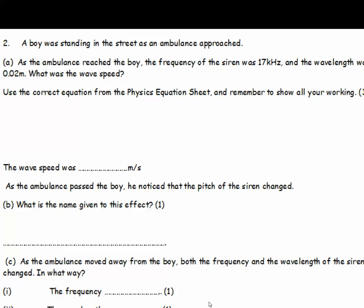A boy was standing in the street as an ambulance approached. Part A. As the ambulance reached the boy, the frequency of the siren was 17 kHz and the wavelength was 0.02 metres. What was the wave speed? Use the correct equation from the physics equation sheet and remember to show all your working. Give the answer in metres per second. As the ambulance passed the boy, he noticed that the pitch of the siren changed. What is the name given to this effect? And Part C. As the ambulance moved away from the boy, both the frequency and the wavelength of the siren changed. In what way?